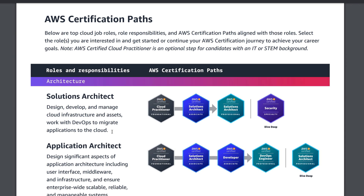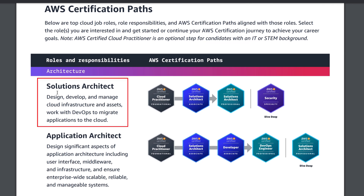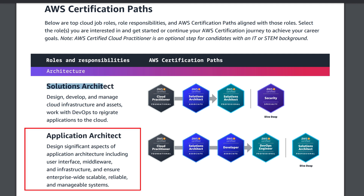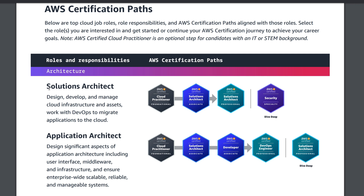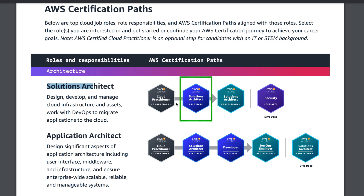As you can see, we have several AWS certification paths. Starting with Solutions Architect — the roles and responsibilities include designing, developing, and managing cloud infrastructure and assets, and working with DevOps to migrate applications to the cloud. If you want to become a Solutions Architect, you start with the Cloud Practitioner foundational certification, then go to Solutions Architect Associate, and then to the professional certification, AWS Solutions Architect Professional.